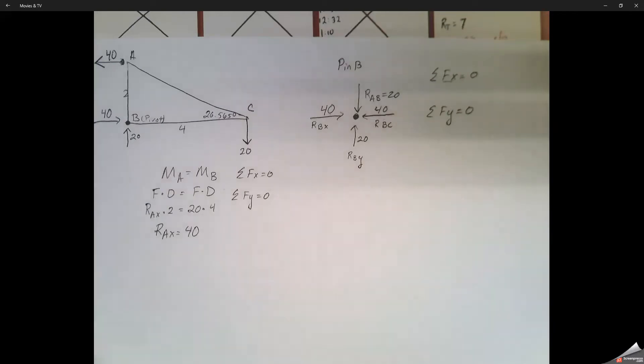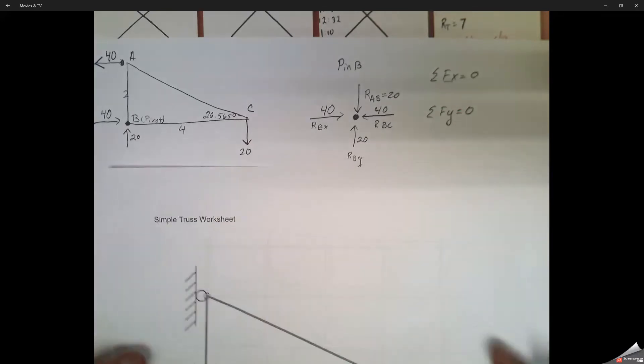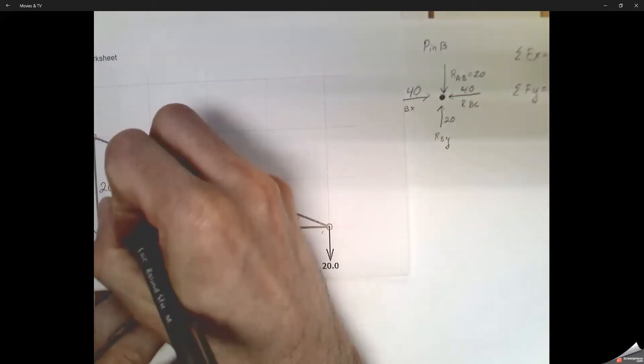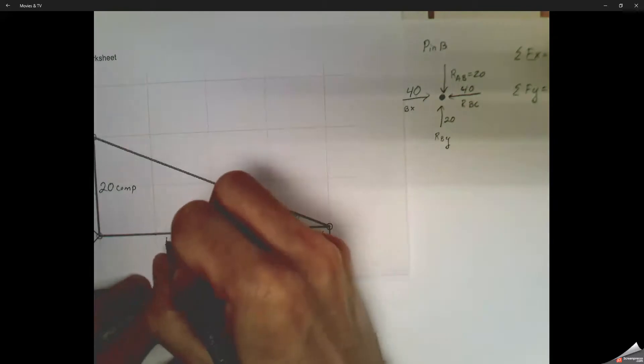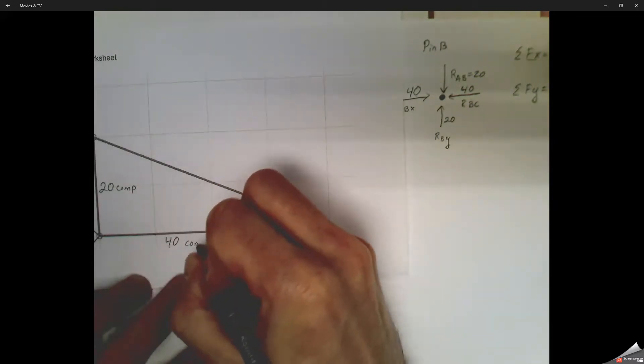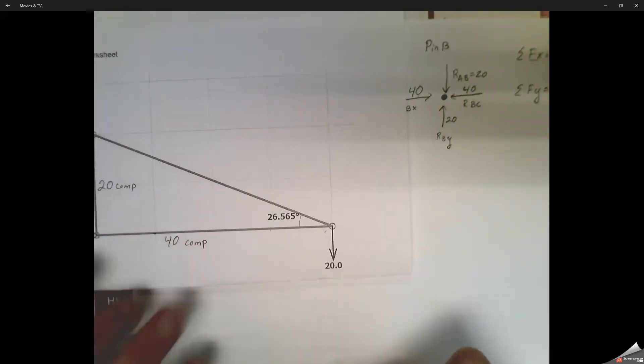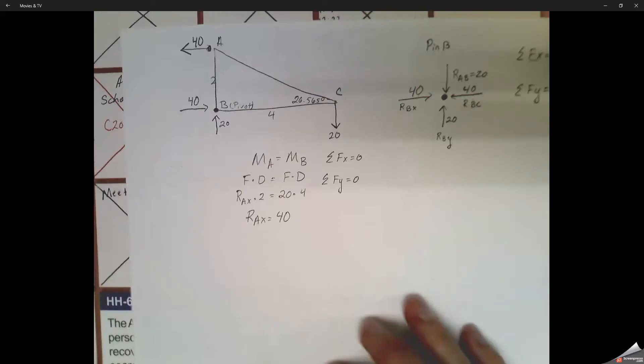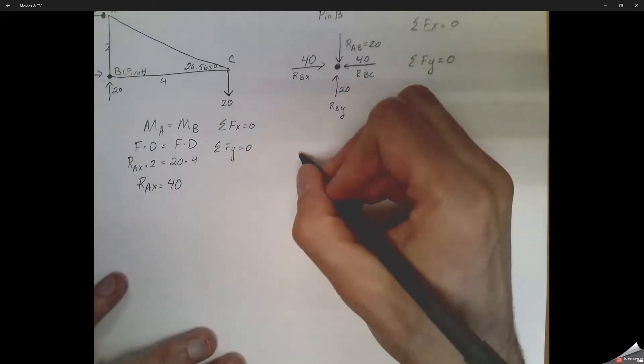Same thing with reaction forces in the y direction. We've got 20 up from our By that we already solved. So that means the reaction force at AB needs to be 20 down, compressing to that joint itself. So we'll go through. We've got 20 compression for AB. We've got 40 compression at BC. So now we've got two-thirds of it done. We've got to figure out what that hypotenuse is.